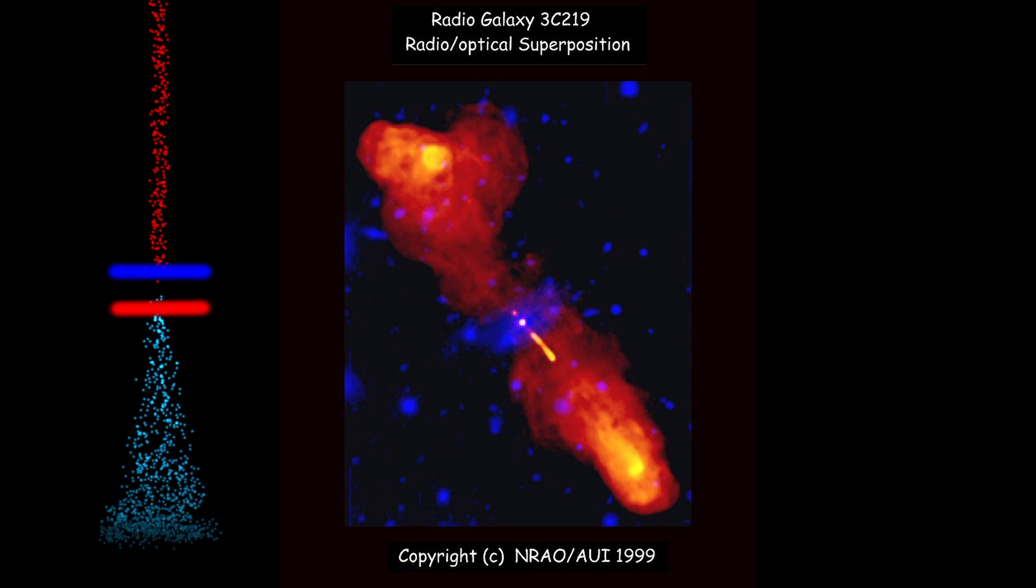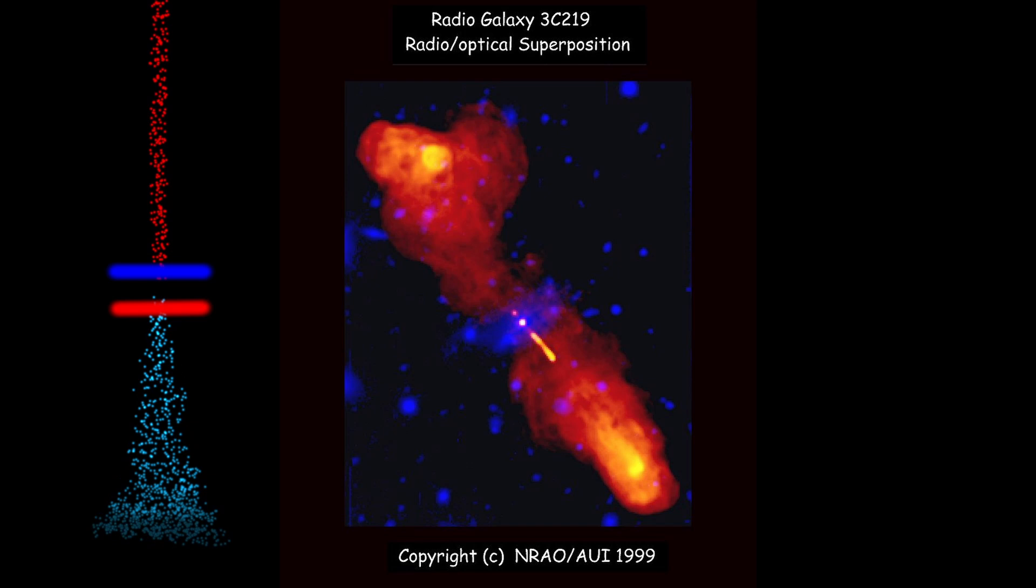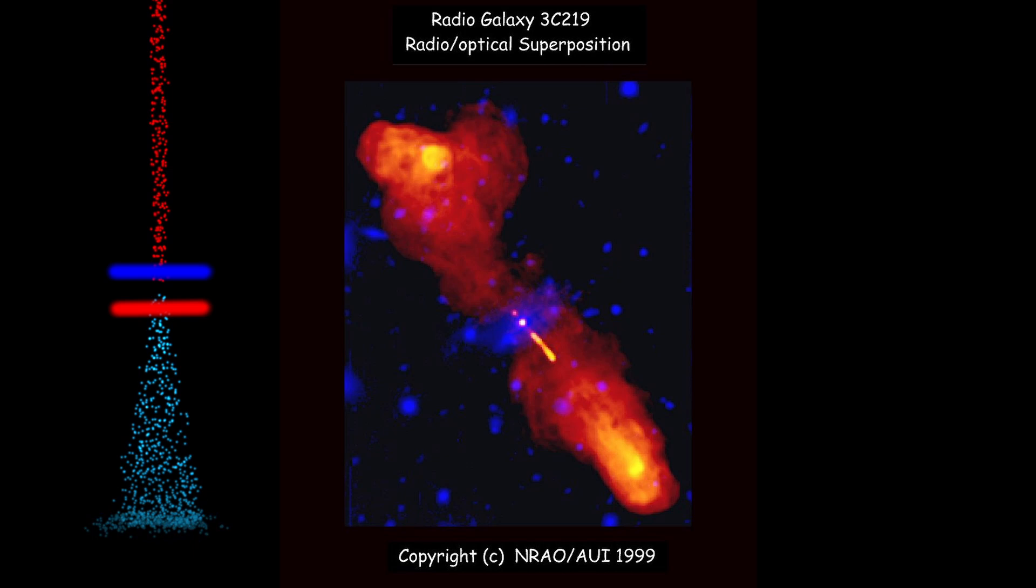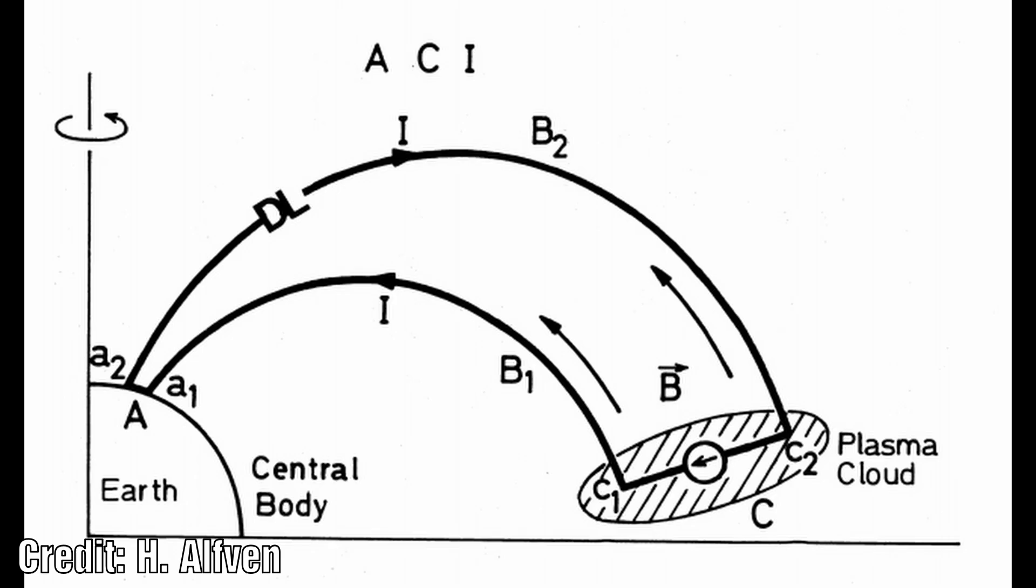Ions passing the double layer in the outward direction will be accelerated to the same energy as the electrons. Because of their larger rest mass, they will not emit much synchrotron radiation.